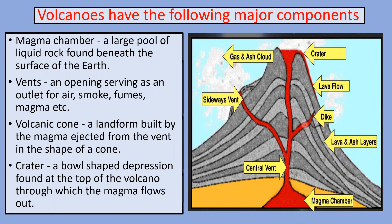A vent is an opening serving as an outlet for air, smoke, fumes, magma, etc. A volcanic cone is a landform built by the magma ejected from the vent in the shape of a cone. During the first volcanic eruption we cannot see the volcanic cone, but after subsequent eruptions the piling up of the lava causes the volcanic cone to form.